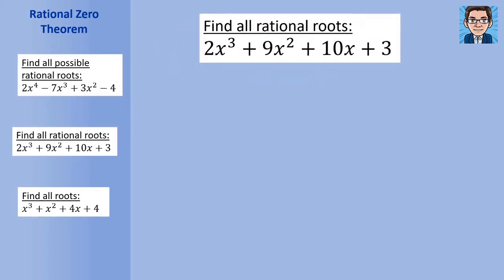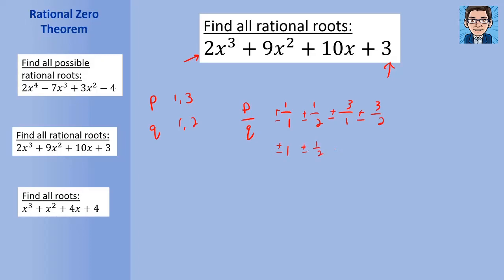On the next problem, we're not just finding all possible rational roots — we want to find all rational roots, meaning a subset of the possible ones that are the actual rational roots. Let's start with all the possibilities. The factors of the constant term P are 1 and 3, and the factors of the leading coefficient Q are 1 and 2. When we take P over Q, we get 1 over 1, 1 over 2, 3 over 1, and 3 over 2 — all plus or minus. So we get plus or minus 1, plus or minus one half, plus or minus 3, and plus or minus 3 halves.